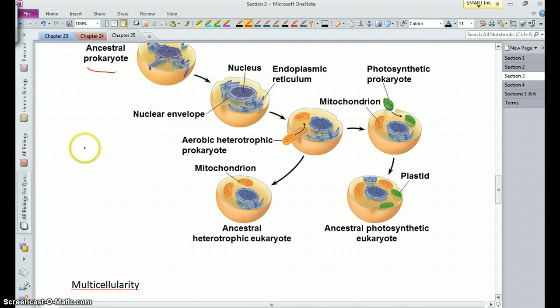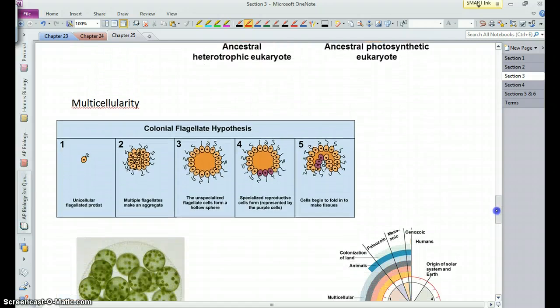This idea of endosymbiosis, an early proponent of it was Lynn Margulis, a microbiologist. And at first people thought it's kind of crazy, but it's become an idea that is pretty much accepted as the way in which prokaryotes came about.